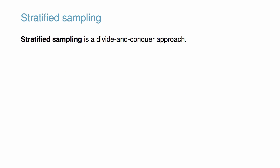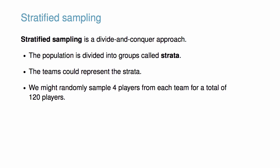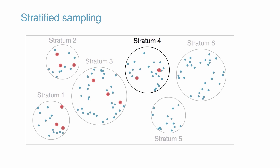Stratified sampling is a divide-and-conquer approach. First, the population is divided into groups called strata, which are chosen so that similar cases are grouped together. In our baseball example, the teams could represent the strata. Then a second sampling method, usually simple random sampling, is employed within each stratum. We might sample four players from each team for a total of 120 players. The figure illustrates the idea behind a stratified random sample — notice that we sample randomly from each stratum.